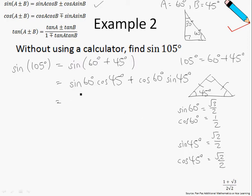So I'm going to replace all these with the values you see over here. So sine of 60 is √3/2, cosine of 45 is √2/2, cosine of 60 is 1/2 and the sine of 45 is √2/2.